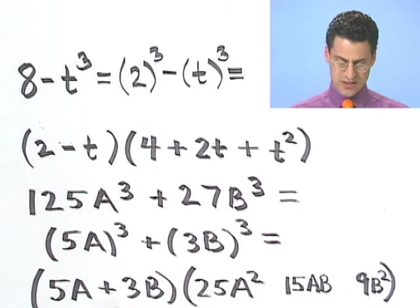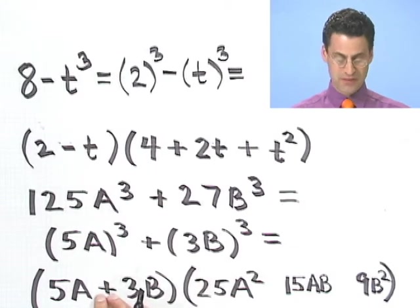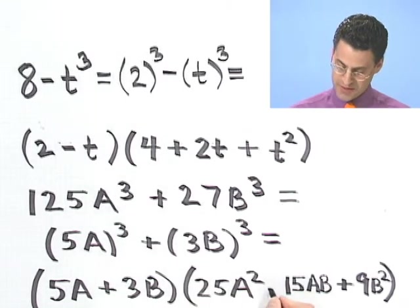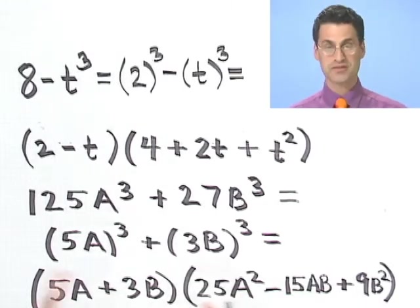What about the signs? Again, we can reason through this. The last term has to be positive. This is already positive. So this always has to be positive. But I need cancellation to happen all over the place. So this must be the negative. And if you check your answer, you can see it's negative.